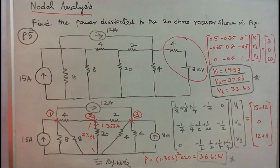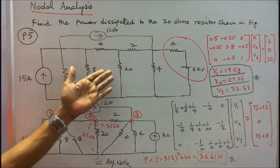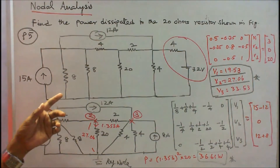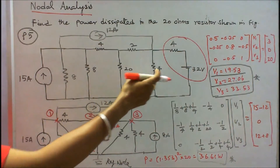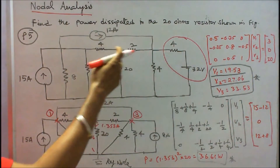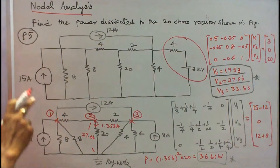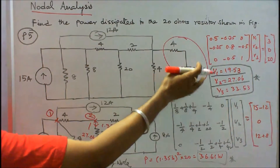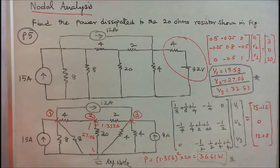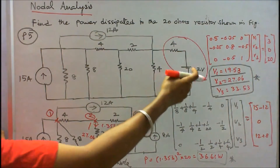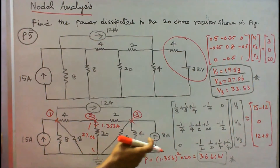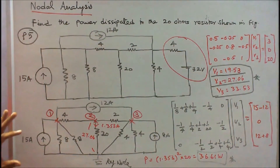Problem number 5. Find the power dissipated in the 20 ohm resistor. The circuit has 7 resistors: 8, 8, 20, 4, 4, 2, and 4 ohms; two current sources of 15 A and 12 A; and one voltage source of 32 V. First, convert the voltage source to an equivalent current source: 32 divided by 4 equals 8 amps, with a 4 ohm resistor in parallel. The redrawn circuit has 3 nodes plus a reference node.